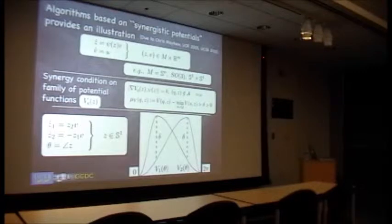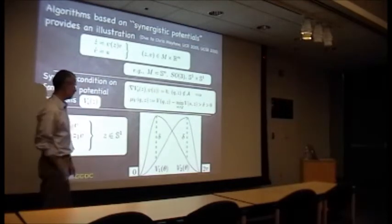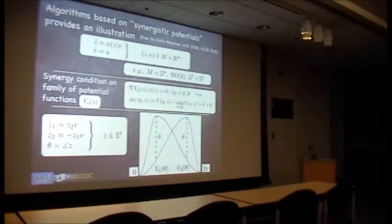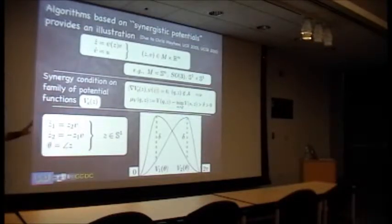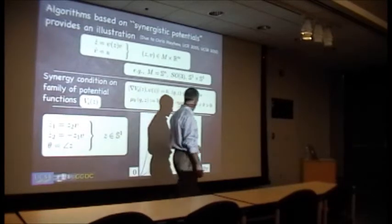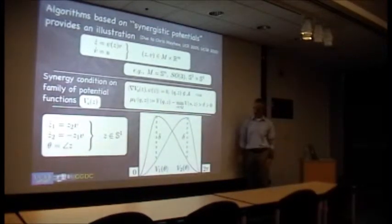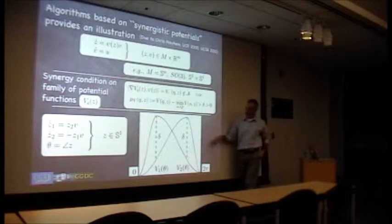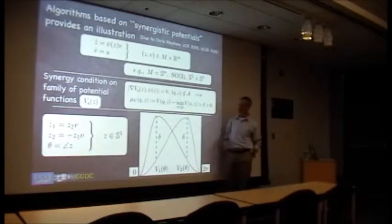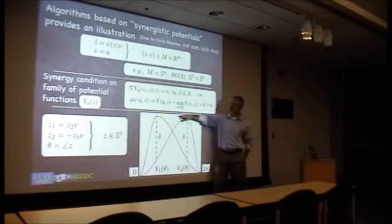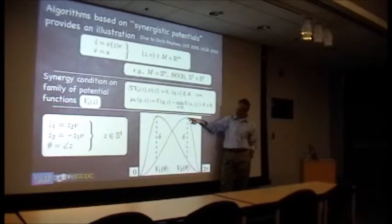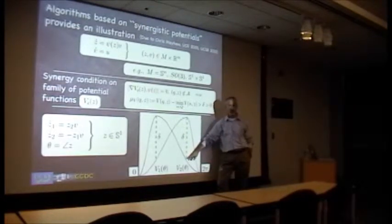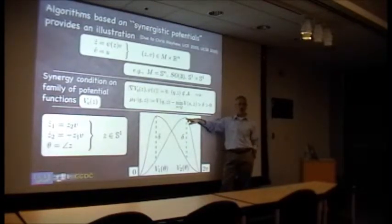Here are two functions V that make up a synergistic potential pair. Think of theta as the angle on the circle ranging from 0 to 2π. We've got this function that matches up at the endpoints, and we make the potentials have their maximum at two different points. Where the maximum occurs, the derivative is zero, and at each of those points the other potential function is much smaller than the current potential.